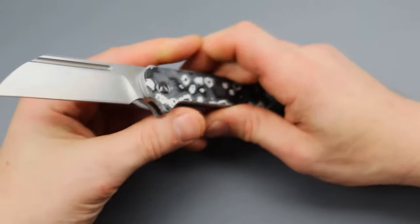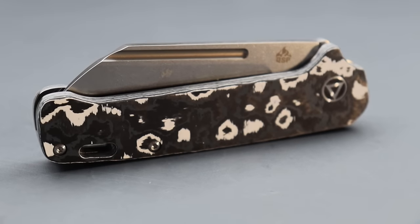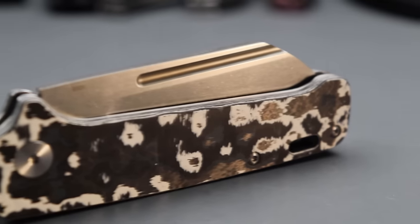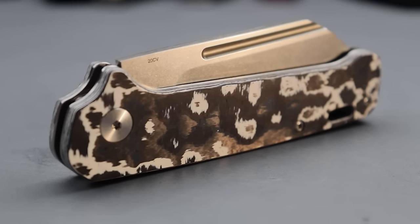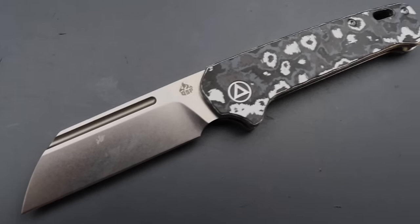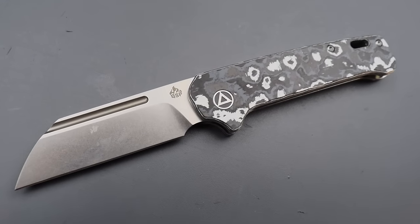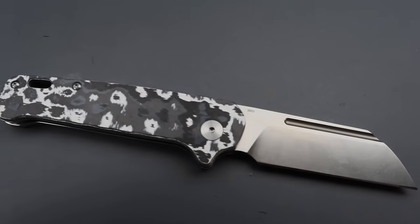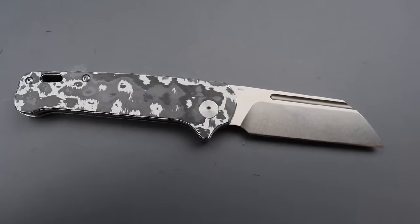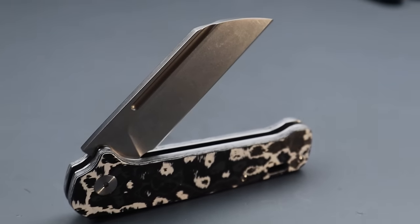Now, mine is the premium one. So, you know, this one does have 20CV and fat carbon fiber. But they have regular versions in 14C with G10. I think that they might have micarta ones, too. But solid knife, you know, for a slip joint, you know, a solid knife, great user. And, you know, like I said, great walk and talk.